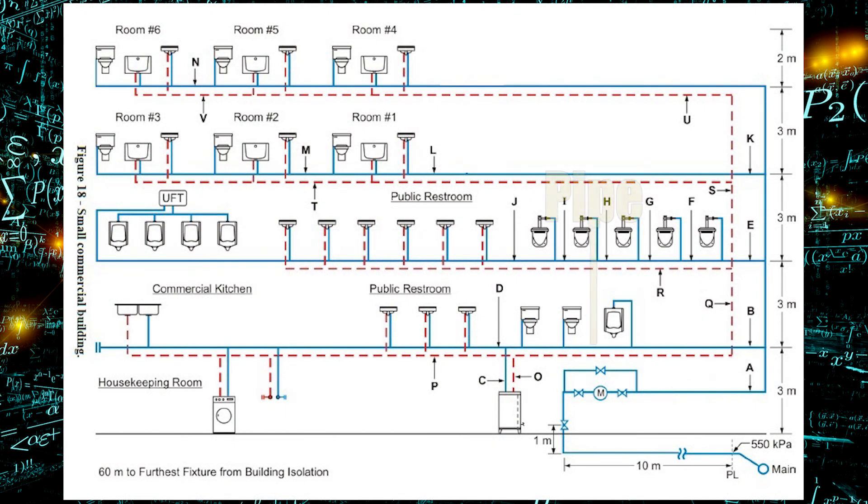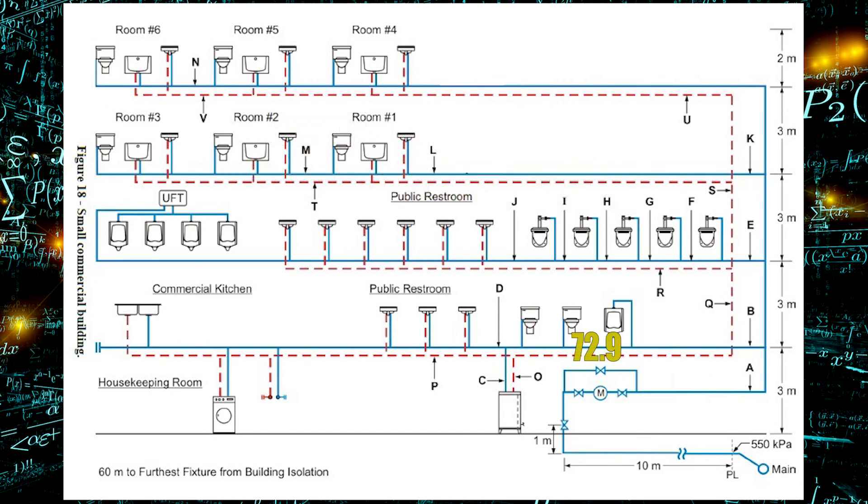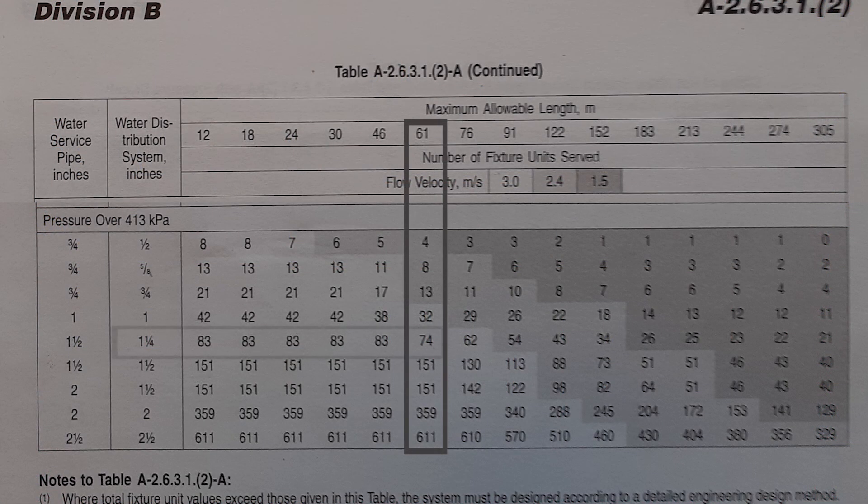Now let's look at that pipe between the urinal and the first water closet. Well, I had 92.9 fixture units and I'm going to subtract off that 20 that go up to the urinal and I'm left with 72.9 fixture units. And once again, if I look up in the appropriate table I will find out that one and a quarter inch is good enough for that.